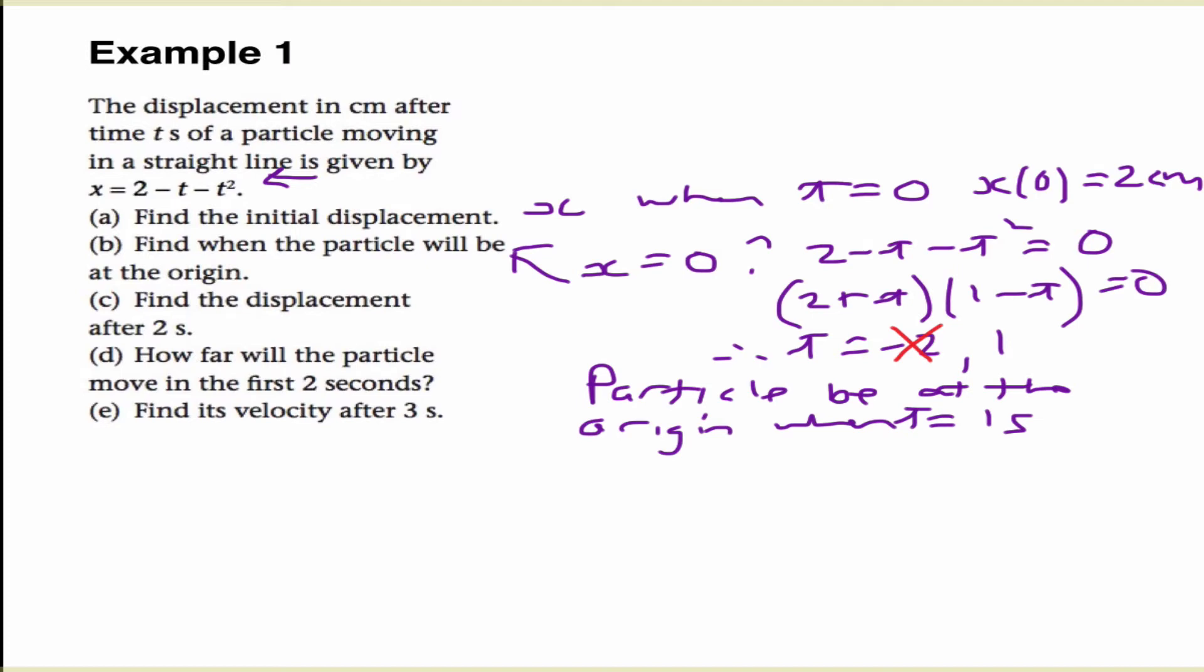Okay, so now we're up to Part C. Find the displacement after 2 seconds. So in Part C, we're saying, what is x of 2? So substituting in there, we get 2 minus 2 minus 4, which is negative 4 centimeters. So if we wanted to think about what that looked like from a diagrammatic perspective, if we have our origin in the middle here,